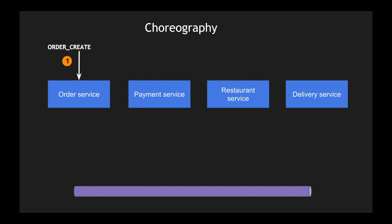The trigger point for each microservice is an event. The first event is 'order create' triggered by the user. The order service creates a new order and publishes an event called 'order created' to the queue. The payment service listens for 'order created,' verifies and finishes the payment, then publishes an event called 'order paid.' Both the order service and the restaurant service are triggered by 'order paid' — the order service updates the transaction state from created to paid.